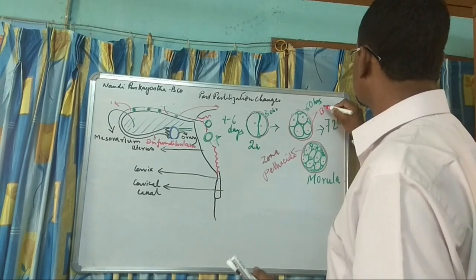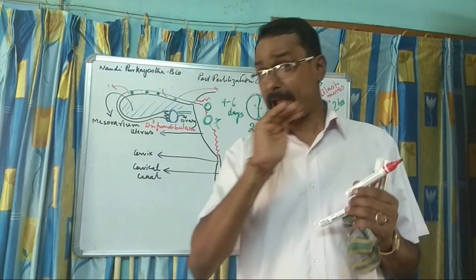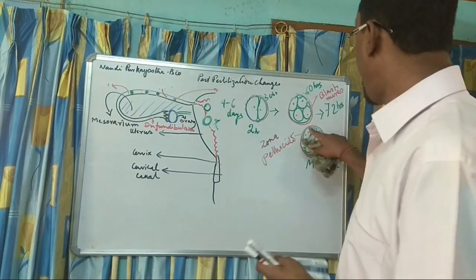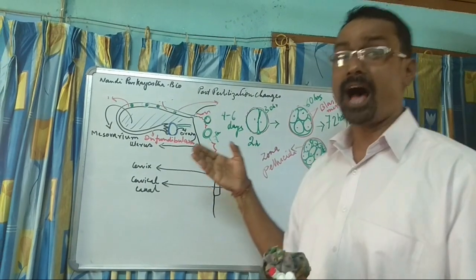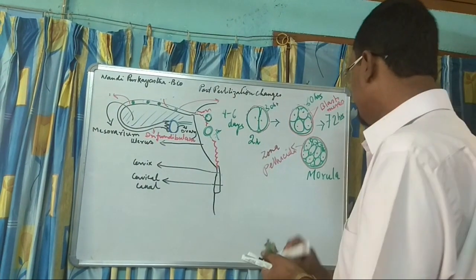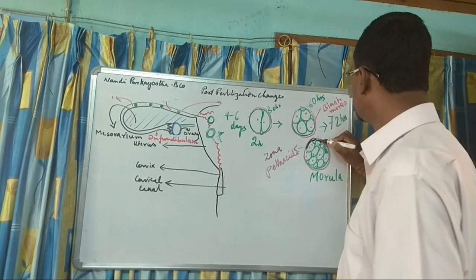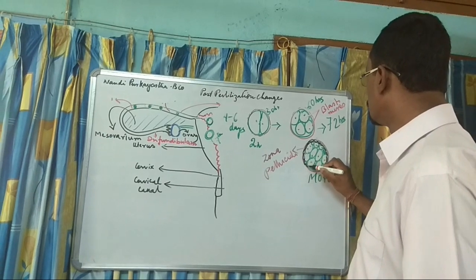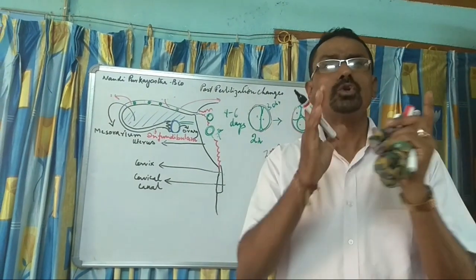These are the blastomeres. Now, the outer cells of the Morula gradually try to bring nourishment from the mucosal lining of the uterus. This outer layer is called the Trophoblast. The trophoblast gives protection and also helps in obtaining nutrients from the uterus.